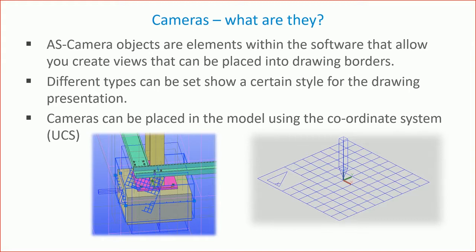The camera can be set by the coordinate system — we use the UCS in the model. You can adjust the UCS to a rotation, then do a camera at UCS and it will set to that. There are UCS tools available in Advanced Steel that make it easier to set the UCS relative to objects.